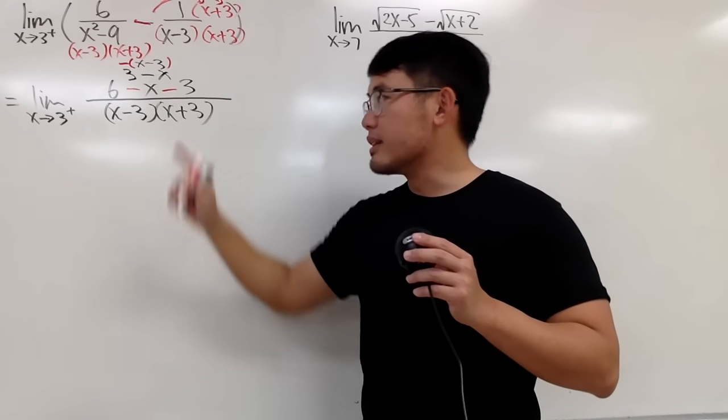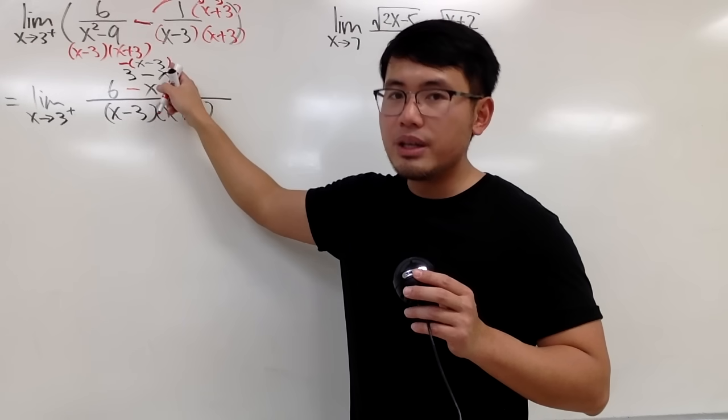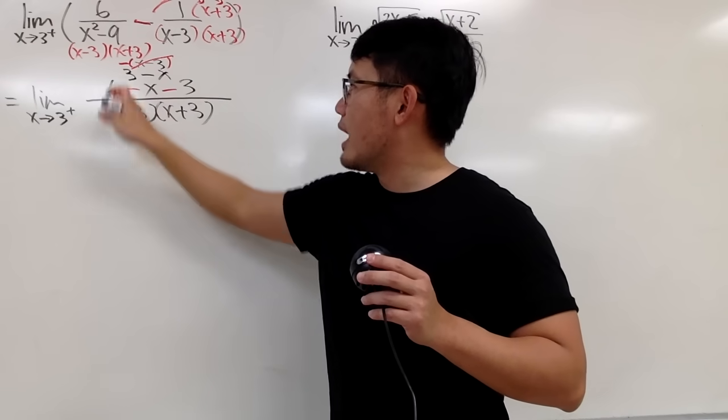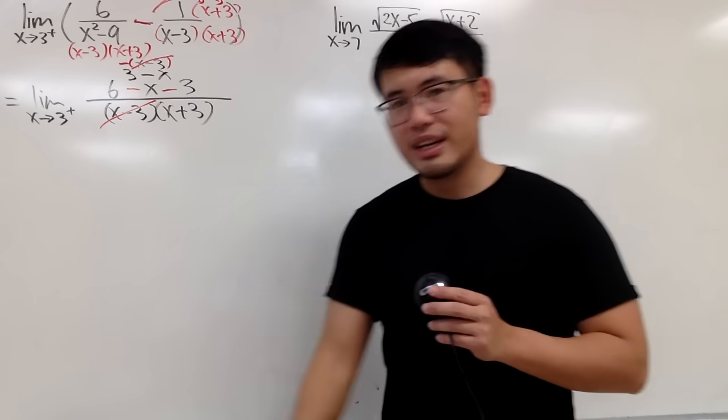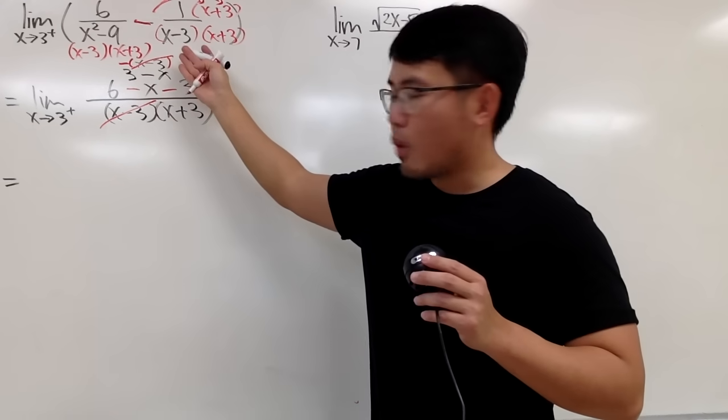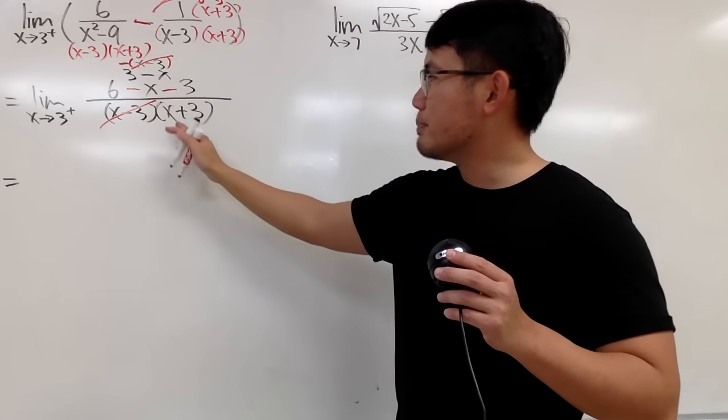So this way, on the top, we actually have negative parentheses of x minus 3. This way, we can cancel this one and that one out. Therefore, on the top, you have negative 1 over x plus 3.